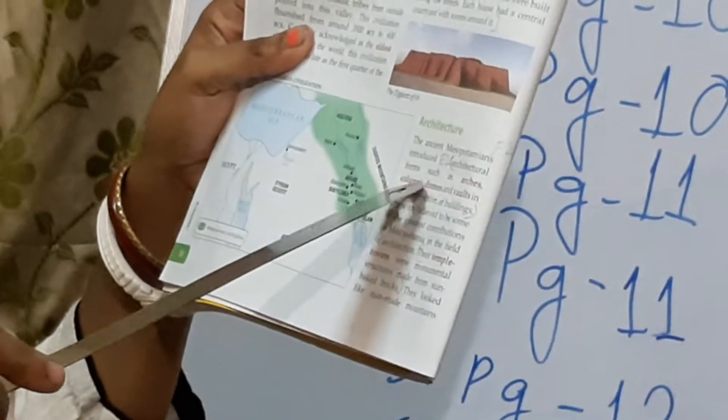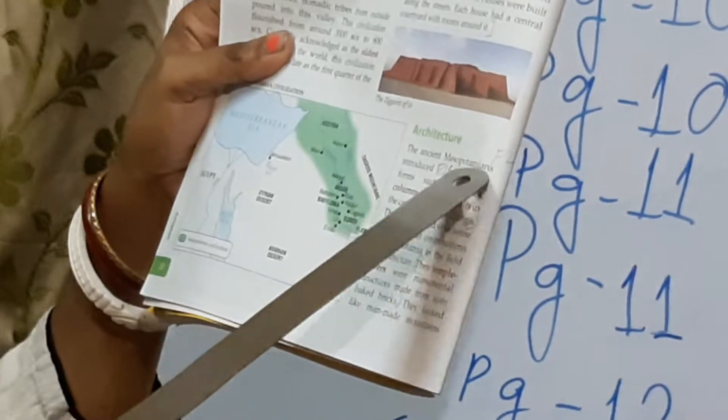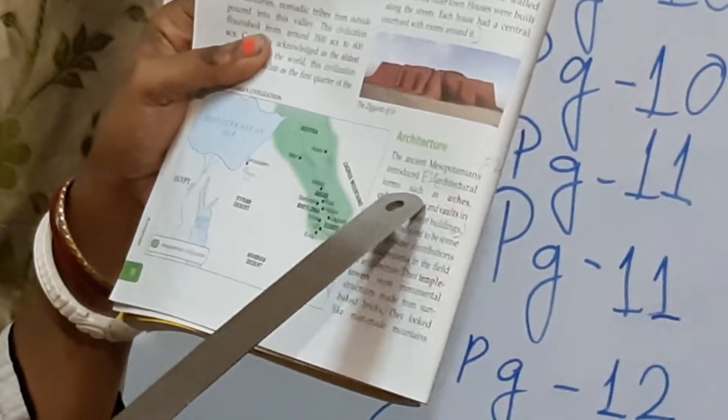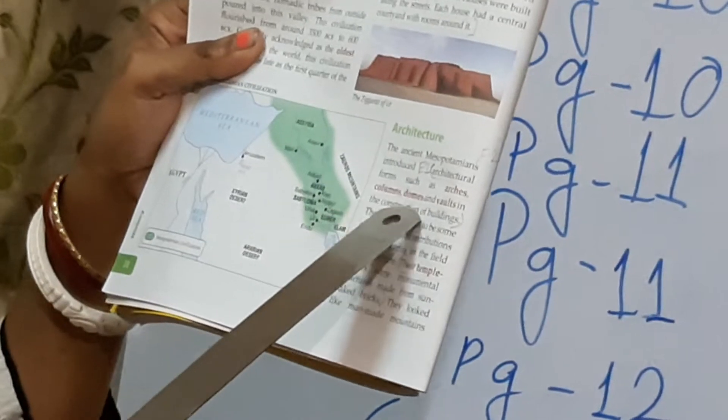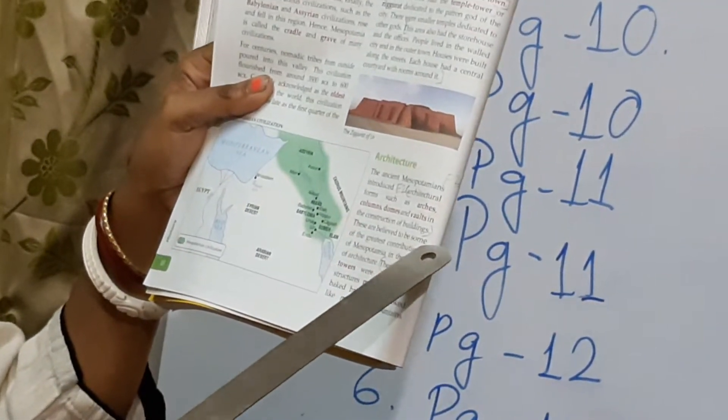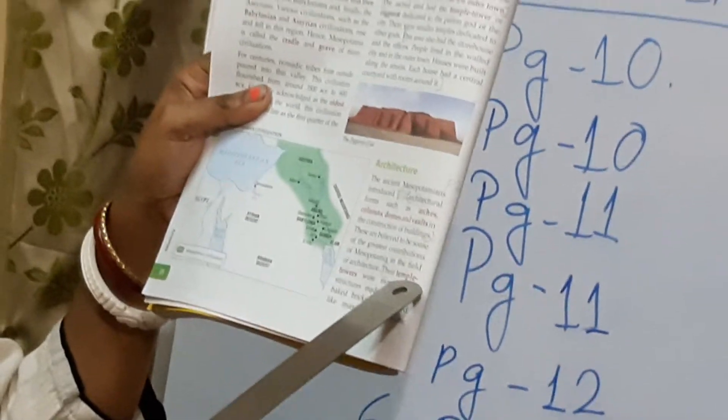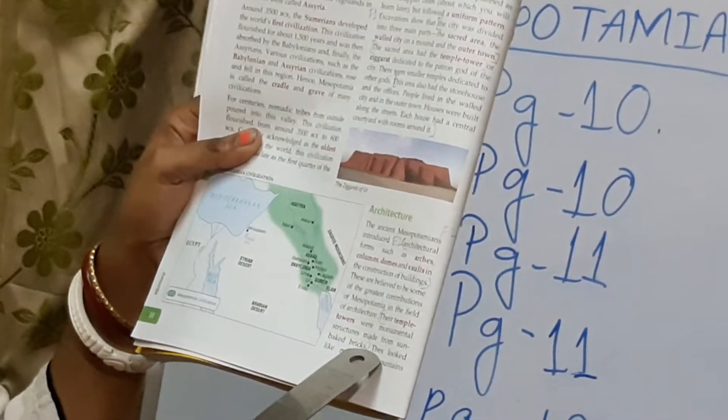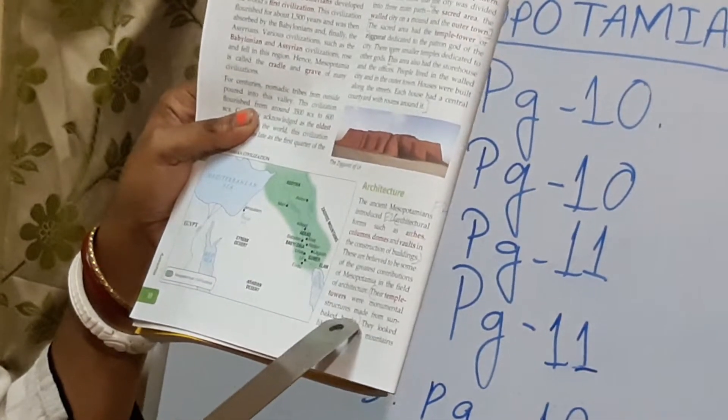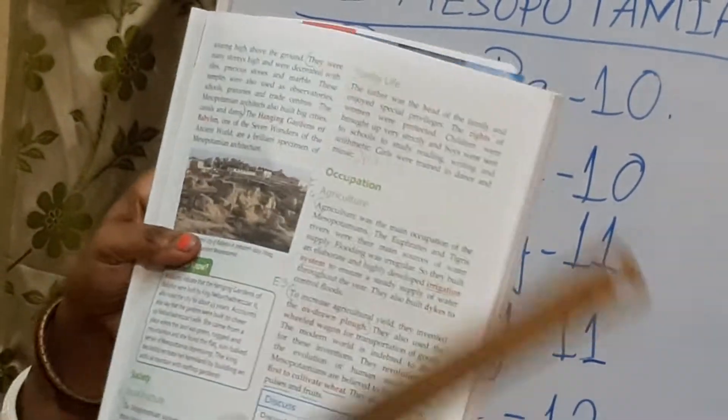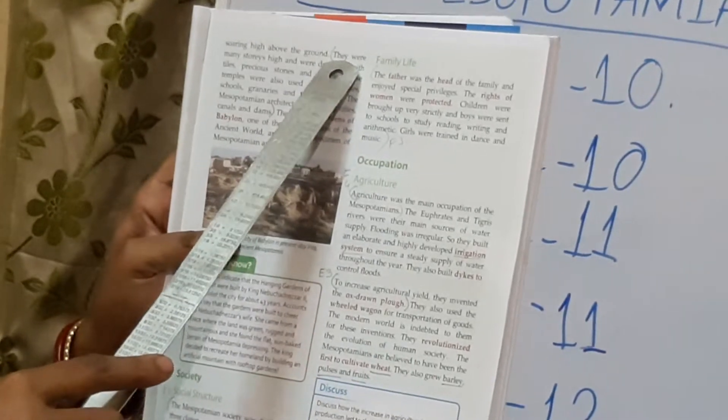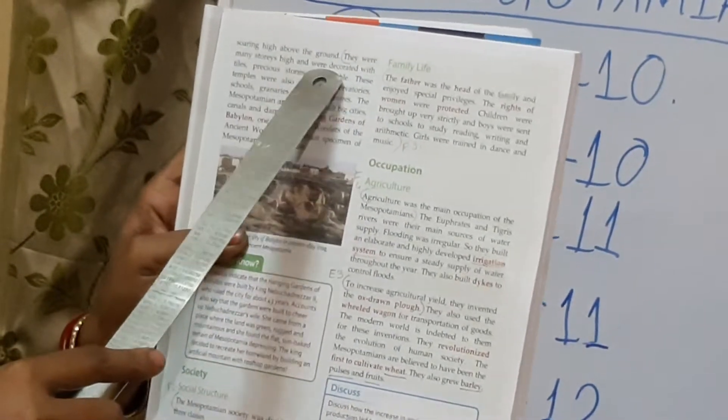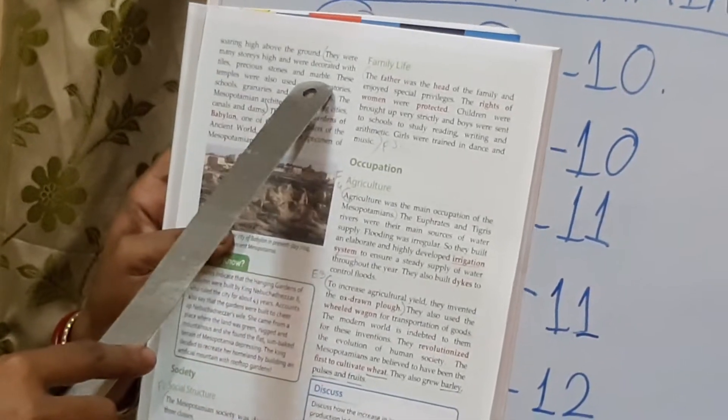Then see the next question. Next second question is also page number 10. It is about architecture. You have to write the answer. So firstly you have to mention about what architecture forms. So you have to start writing from here that the ancient Mesopotamians introduced architectural forms such as arches, columns, domes and walls in the construction of buildings. Then you will write: their temple towers were monumental structures made from sun-baked bricks.